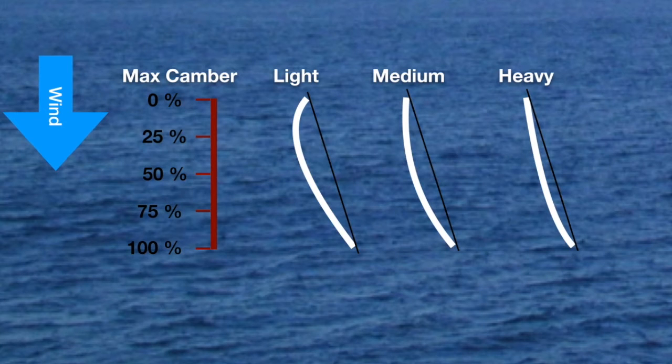A good starting point for light winds is to have your maximum camber, indicated by the red arrows, 25 percent from the front of the sail.